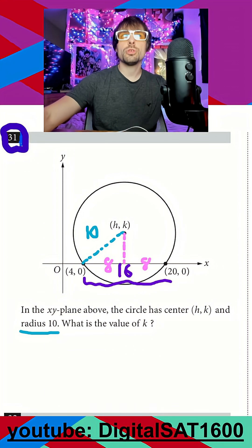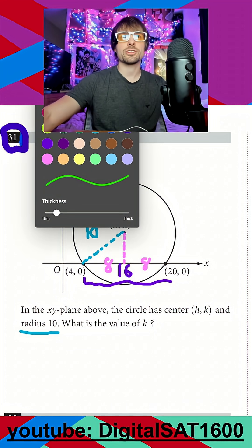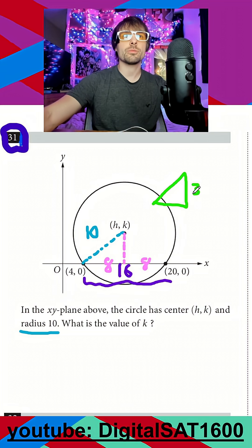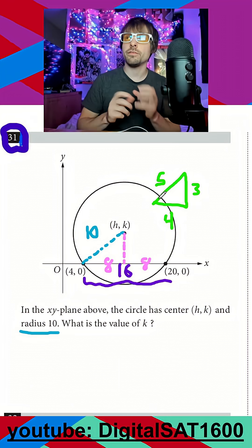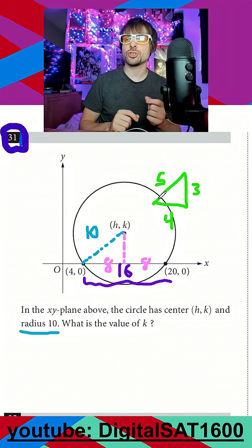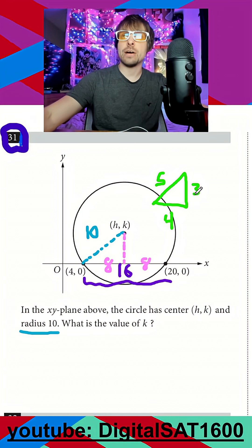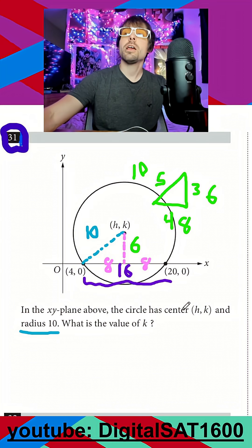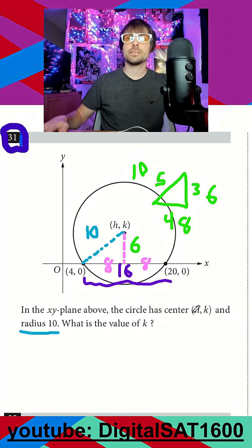You could use the Pythagorean theorem to calculate the third side, or you could just remember one of your most basic triangles: the 3-4-5. If you ever have two of these three numbers in a triangle, remember that multiples count too. So I can also see a 6, 8, and 10. I noticed that I have an 8 and a 10, so I already know that my height of this triangle is 6. My k value here is 6.